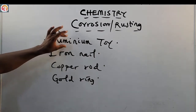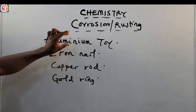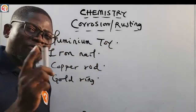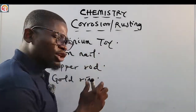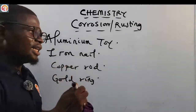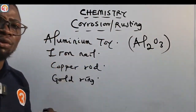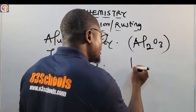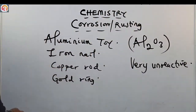But why does the aluminum tool, which is more reactive than iron, not corrode faster than the iron nail? The reason is that because aluminum is more reactive than iron, it quickly reacts with atmospheric oxygen to form aluminum oxide, Al2O3. This aluminum oxide that forms is very unreactive.